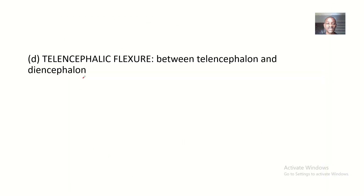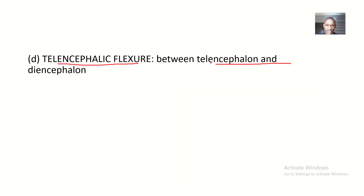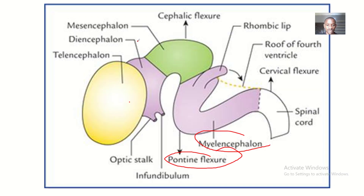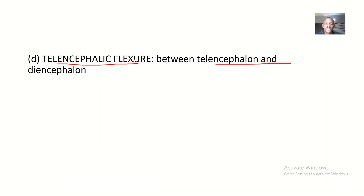Last but not least, we have the telencephalic flexure, which is between the telencephalon and the diencephalon. You can see this is the diencephalon, this is the telencephalon, and both of them are developing from the prosencephalon. The flexure between them is called the telencephalic flexure, although it's not shown here.